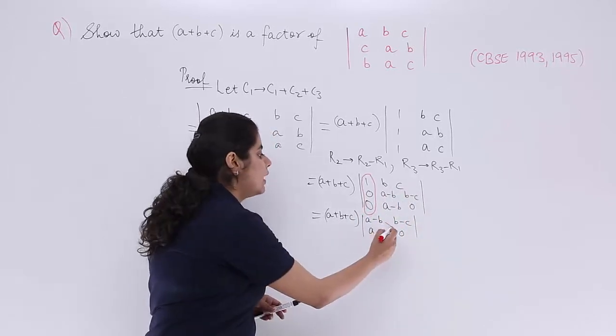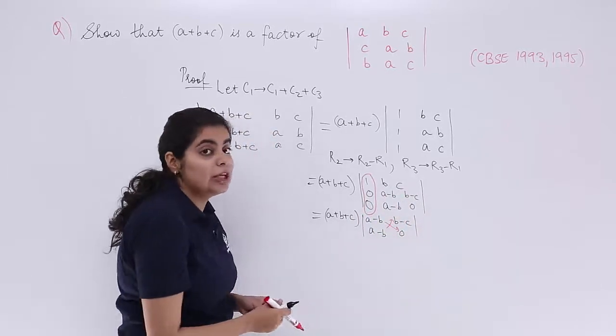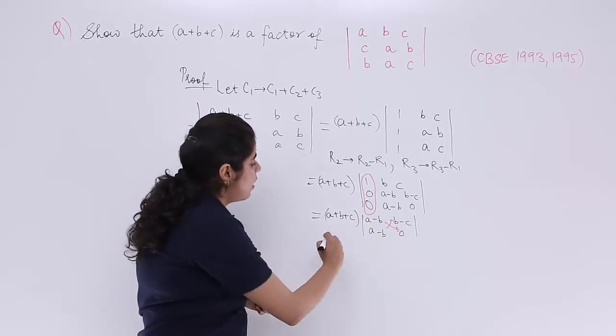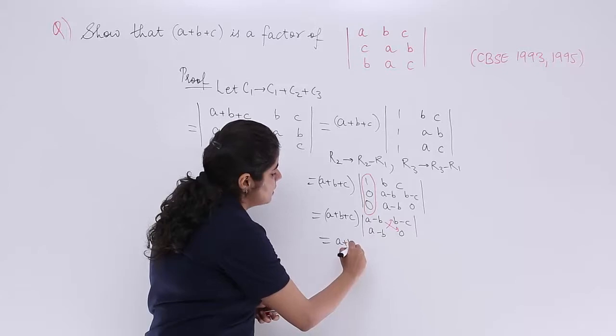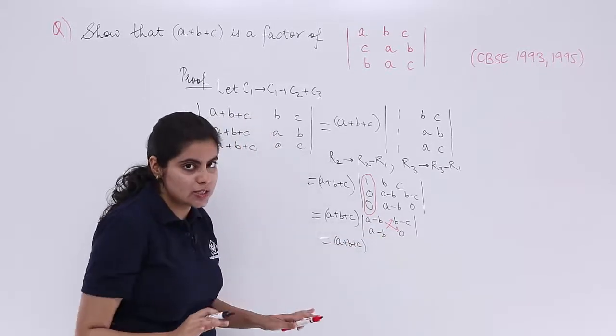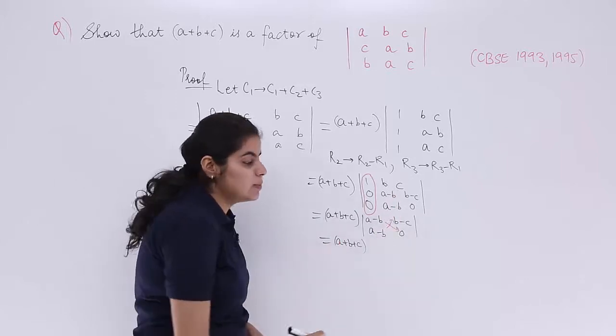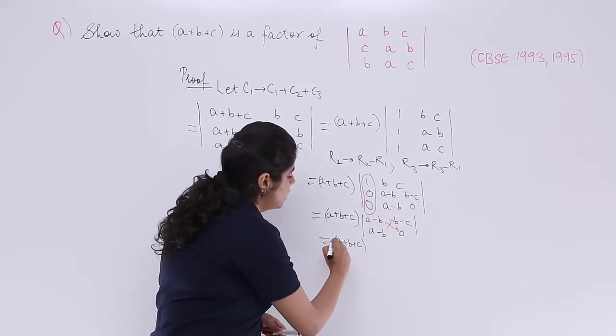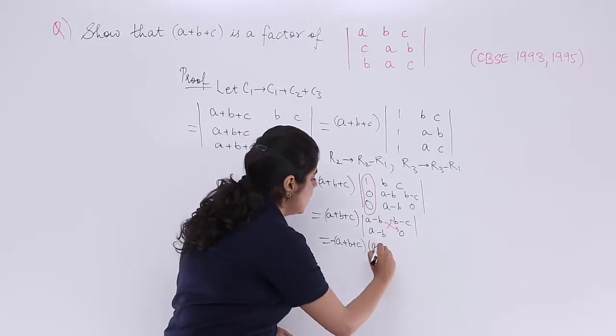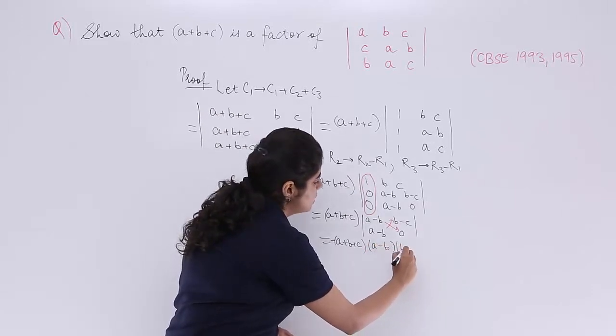This sub determinant is left. Now how to evaluate this? Just cross multiply. You can even take out a minus b as common if you want, right? So it is a plus b plus c. Inside you have a minus b into 0 which is 0 and a minus b into b minus c. So minus comes out as common because you are going from bottom to up. It is a minus b into b minus c that you get.